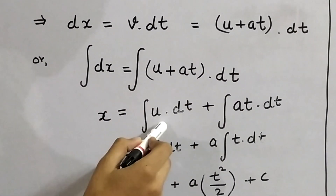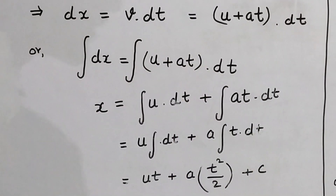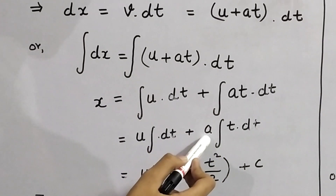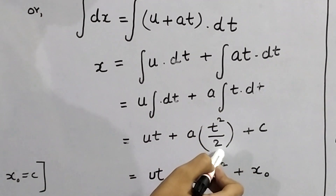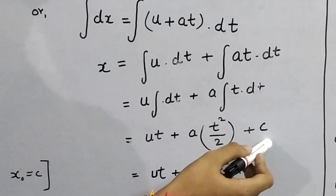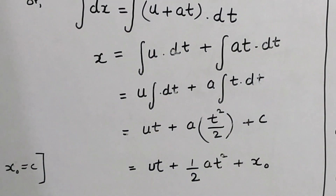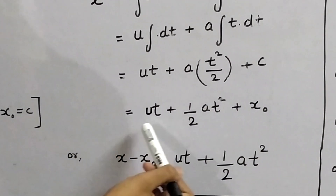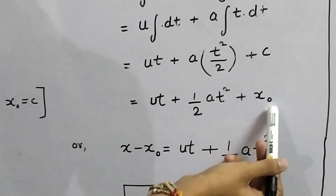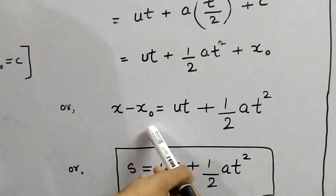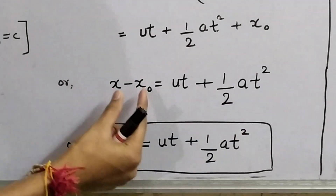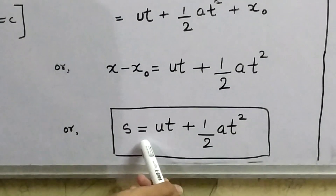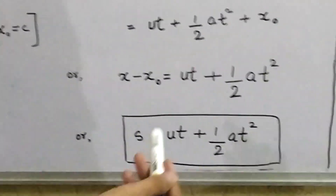The integral of dx gives X, and the right side gives UT + ½AT² plus a constant C, where U and A are constants brought outside the integral. Here, C equals X₀, the initial position, just as C equalled U in the first equation. Putting C = X₀, we get X = UT + ½AT² + X₀. Taking X₀ to the left-hand side, we get X − X₀ = UT + ½AT². This X − X₀ is the change in position of the particle, which is displacement. So, displacement S = UT + ½AT², and in this way the second equation is derived.